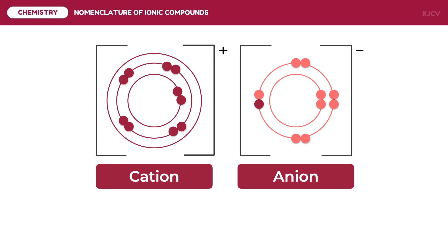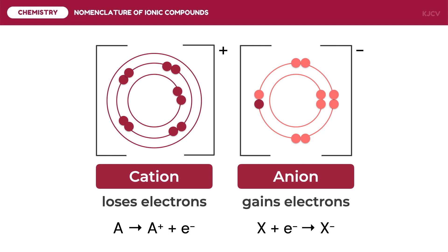Specifically, the positively charged ion is called a cation. It is represented by a process in which an electron is a product, showing a loss of electron. On the other hand, the negatively charged ion is called the anion. It is represented by a process in which an electron is added to the original element, showing a gain of electron. Because cations and anions have opposite charges, they attract each other. This force of attraction between oppositely charged ions is called ionic bonding, forming ionic compounds.